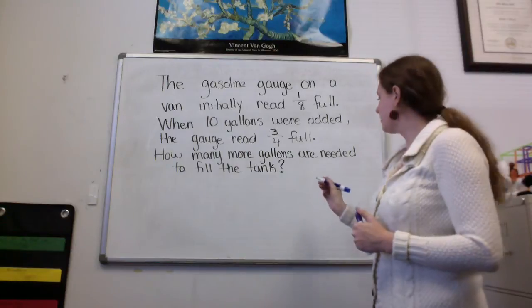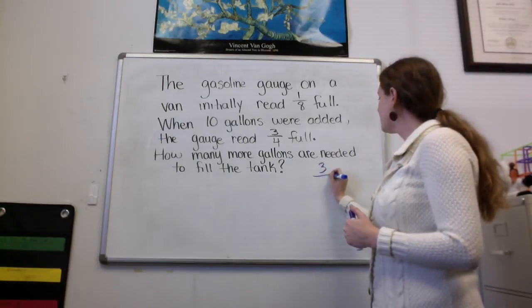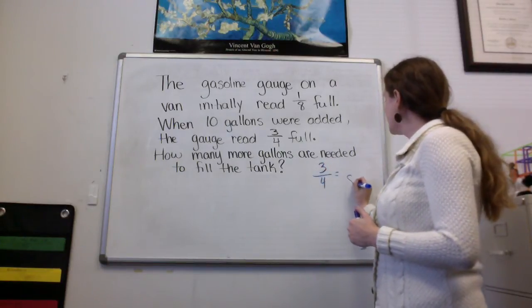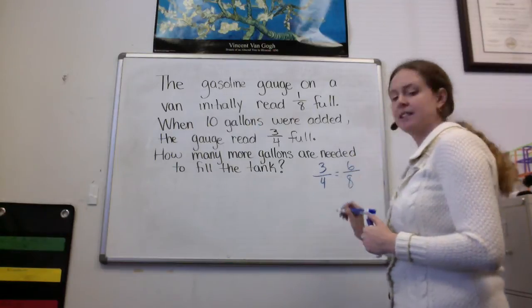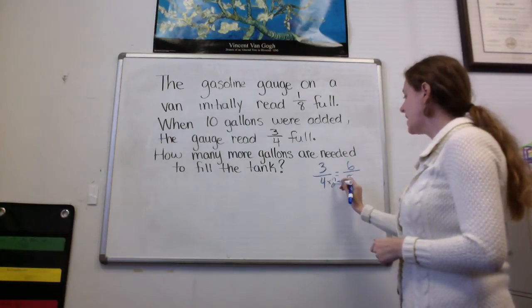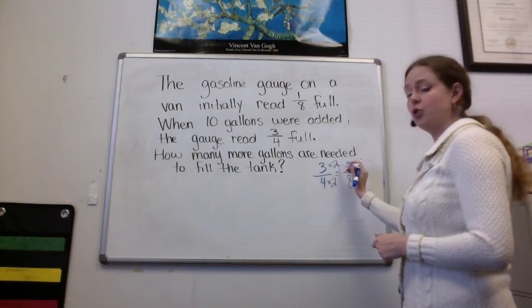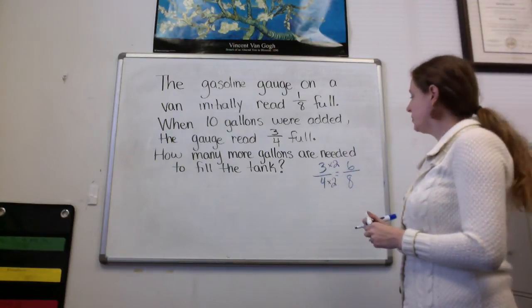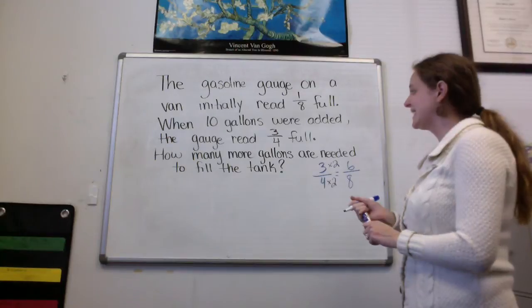So I've got 1/8 and 3/4. 3/4 I can change to be 6/8. I got that by saying 4 needs to become 8, I do that by multiplying by 2. So I multiplied both the numerator and denominator to get to 6/8.